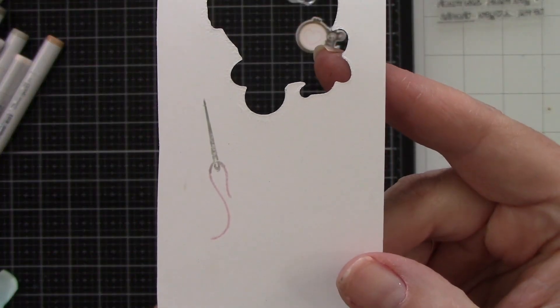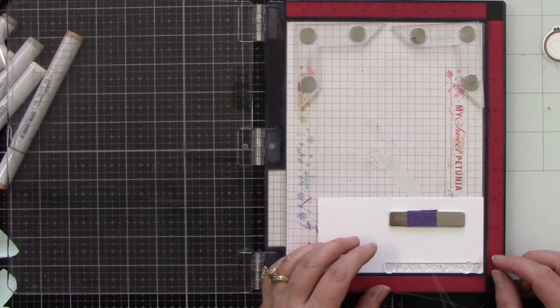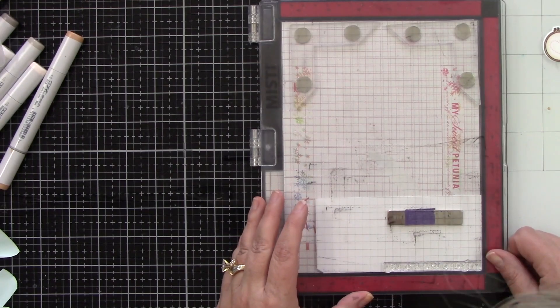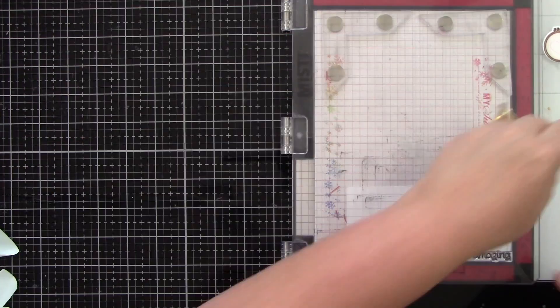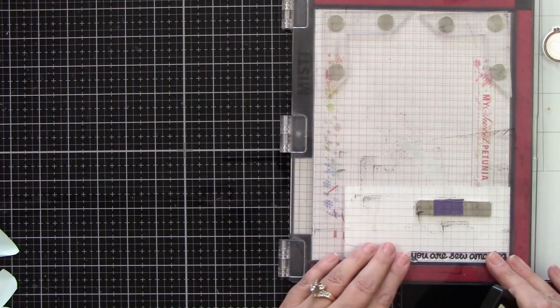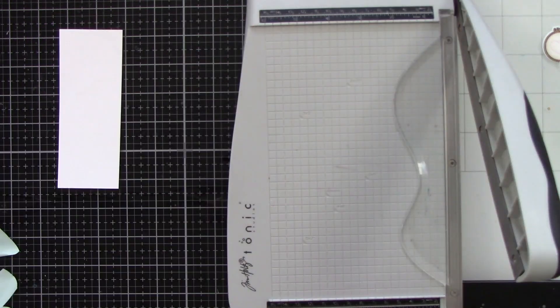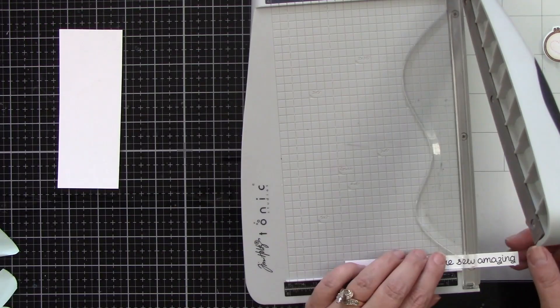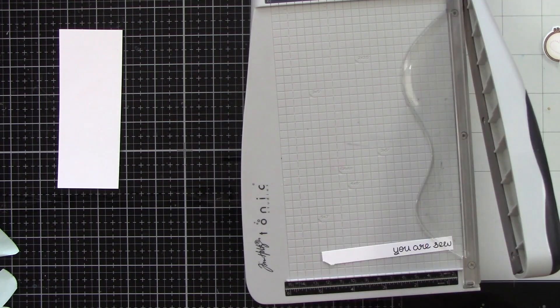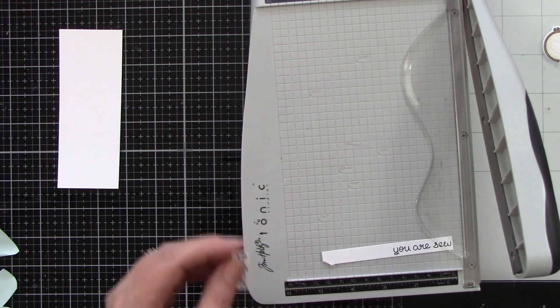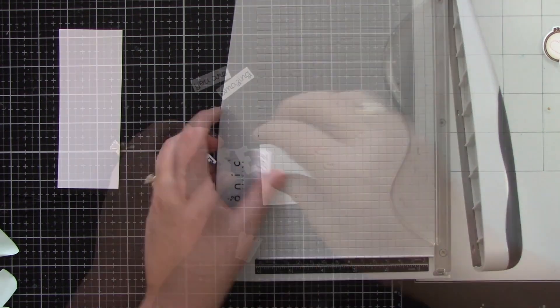Then I can use the coordinating die to die cut that out as well. Then I have the sentiment that says you are so amazing but I want to trim the sentiment apart. I will be using the Kohl's ABCs die to spell the word sew, S-E-W. So I'm going to trim down my sentiment and trim out the word so. So we're going to be keeping you are amazing. I stamped that with the same jet black ink as I did for the cute little mouse image.